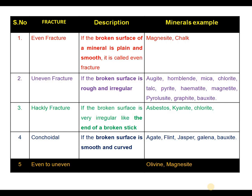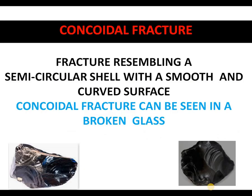Let us see the pictures to understand how minerals exhibit all these fractures. This is the mineral where we can see conchoidal fracture. It almost resembles a semicircular shell with a smooth and curved surface. You can see very clearly how the broken surface of the mineral is curved and almost smooth in both pictures. This is called conchoidal fracture.